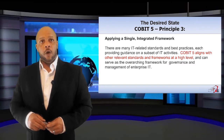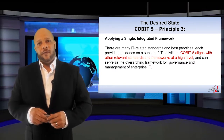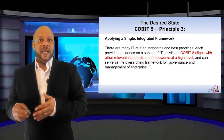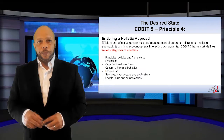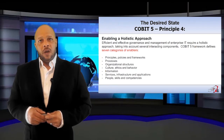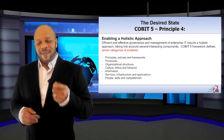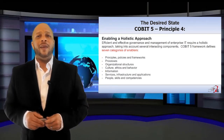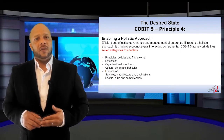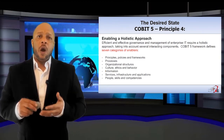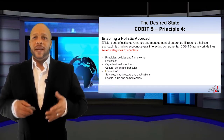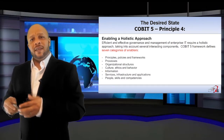The third principle of COBIT is to apply a single integrated framework, aligning with other relevant standards and frameworks at a higher level. The fourth principle is to enable a holistic approach — COBIT defines seven categories of enablers: principles, policies, and frameworks; processes; organizational structures; culture, ethics, and behavior; information; services, infrastructure, and applications; and people, skills, and competency.